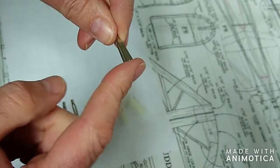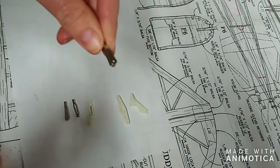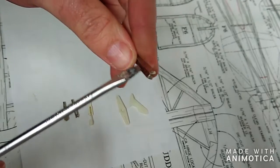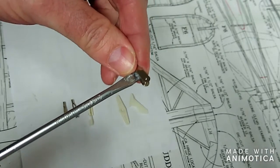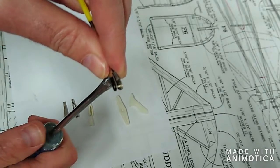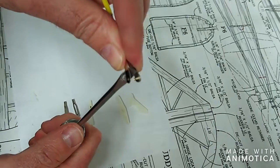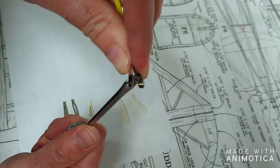To connect the clevis to either the horn or the servo arm, you need to gently spread apart the two arms. And I use a flat head screwdriver to do this. Like so.